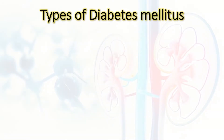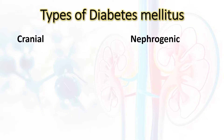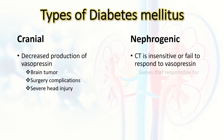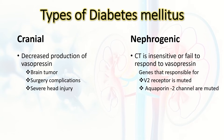There are two types of diabetes insipidus: cranial and nephrogenic. In the cranial type, pituitary production of ADH is decreased. In the nephrogenic type, the genes for V2 receptors and aquaporin-2 water channels are mutated, so the collecting duct is insensitive to or fails to respond to ADH.